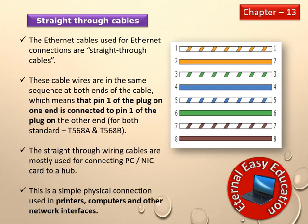Straight-Through cables are used for Ethernet connections. The cable wires are in the same sequence at both ends — pin 1 on one end connects to pin 1 on the other end, sequentially and strictly. Straight-through wiring cables are mostly used for connecting a PC or NIC card to a hub, and are commonly used for printers, computers, and other network interfaces.